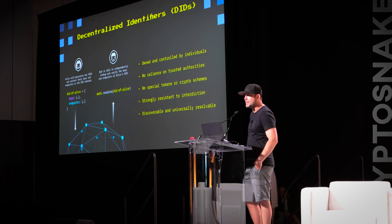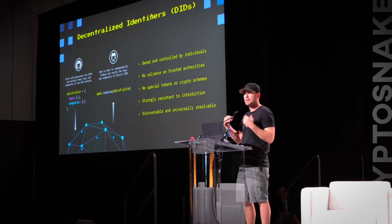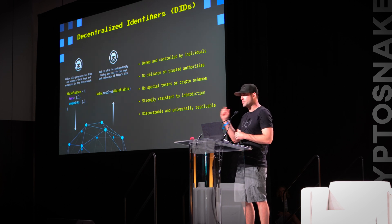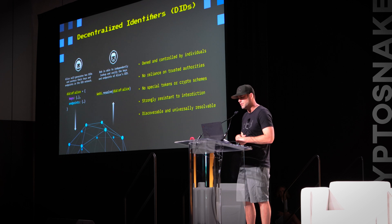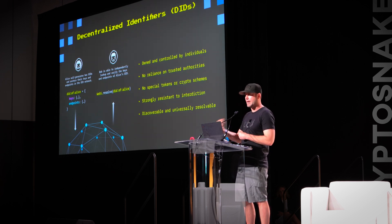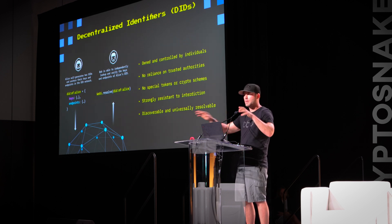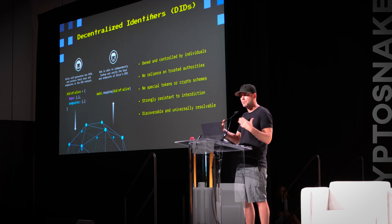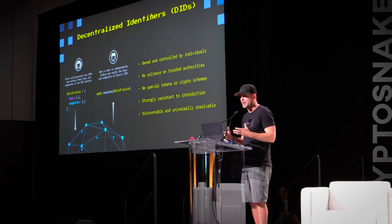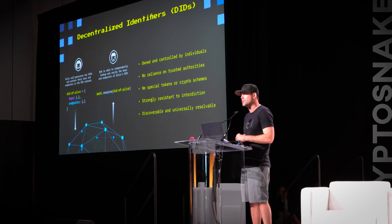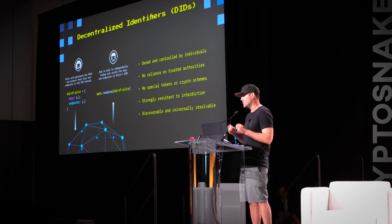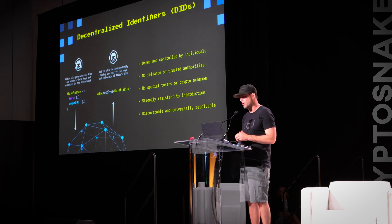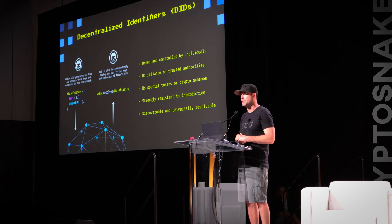In depth on decentralized identifiers: all a DID is, is a stable ID that links to keys and endpoints, essentially replacing the equivalent of DNS zone files. If you know someone's DID, you can look up these pointers and know their keys. Typically these are run as networks so you can dial in and resolve people. It gets rid of the whole directory concept. They're only controlled by you — no reliance on trusted authorities, no CA system, no DNS trust, no special tokens or crypto schemes needed. This runs as a layer two right on top of Bitcoin, and is strongly resistant to interdiction — no actor can keep the system from running or keep people from resolving your DIDs. And it's discoverable and universally resolvable, just like typing a domain name into your browser.